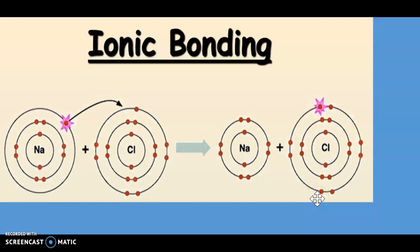So plus represents one electron lost. Cl 1- represents one electron being gained.